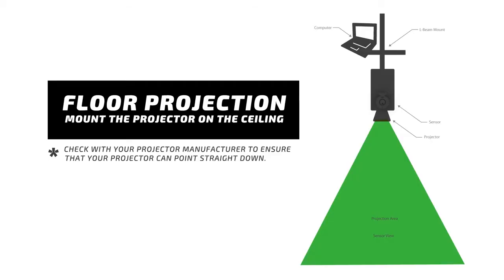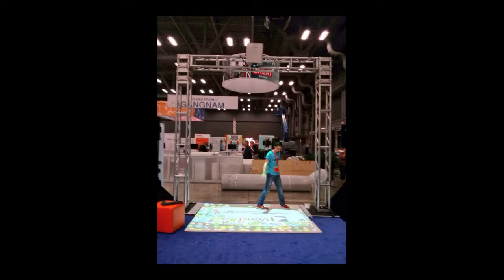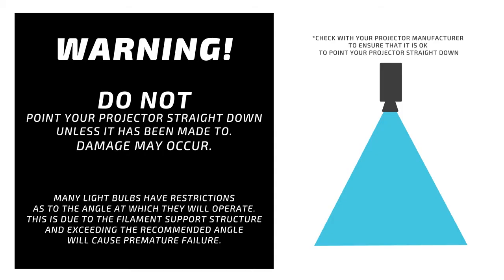The second way is to mount the projector on the ceiling above the area on the floor that you want to project on — like this. Please make sure your projector's pitch rating allows it to be pointed straight down, as damage to the projector may occur if it does not.